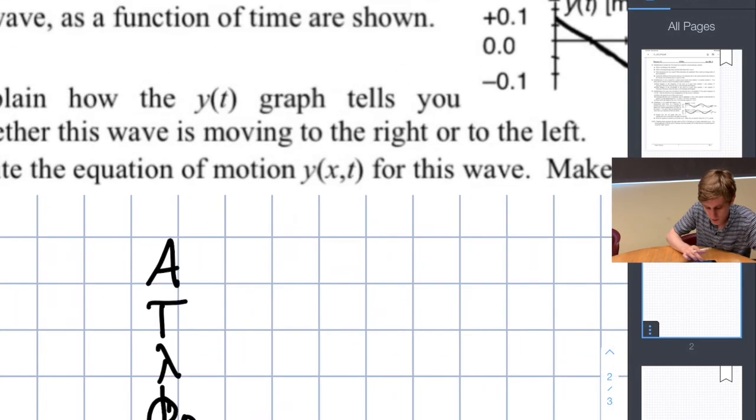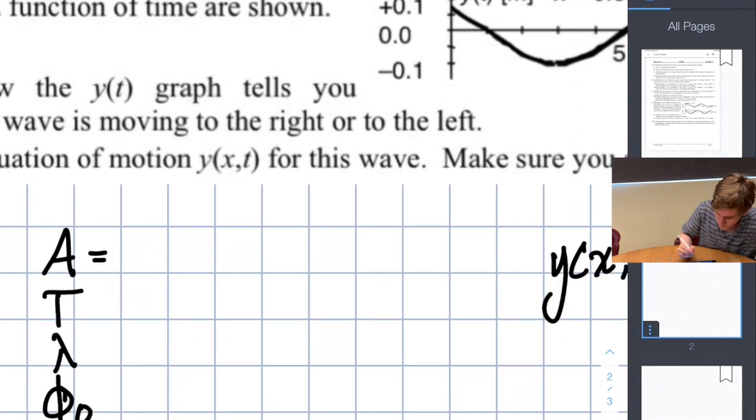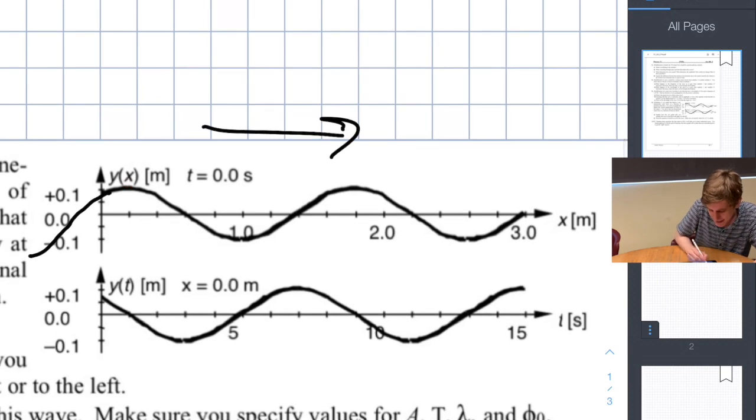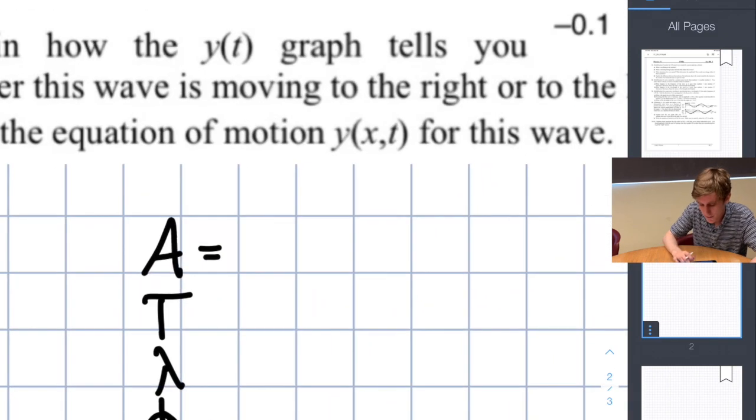Let's start with amplitude. Remember the amplitude just tells us how tall the wave is, this distance right here. Looking at this graph it appears to me that the peak is at right about plus 0.1. That's in units of meters. So we know that the amplitude of our wave, this distance or equivalently this distance, is equal to about 0.1 meter.